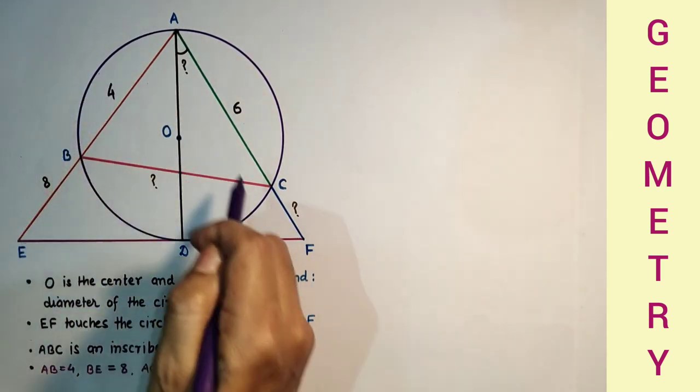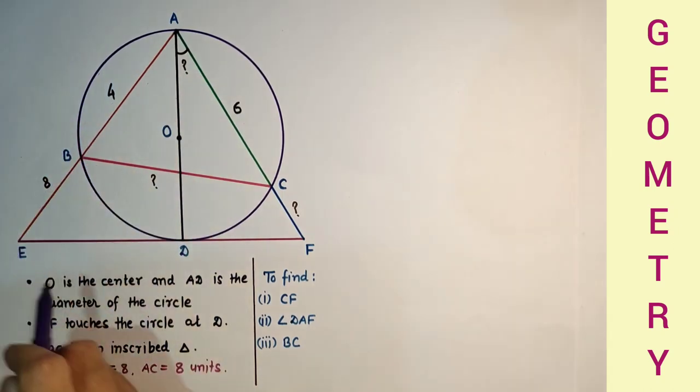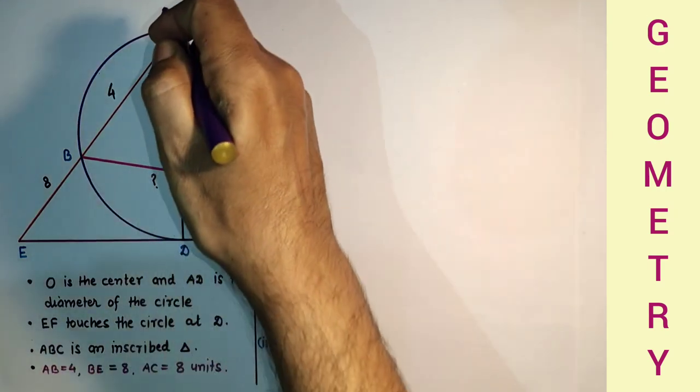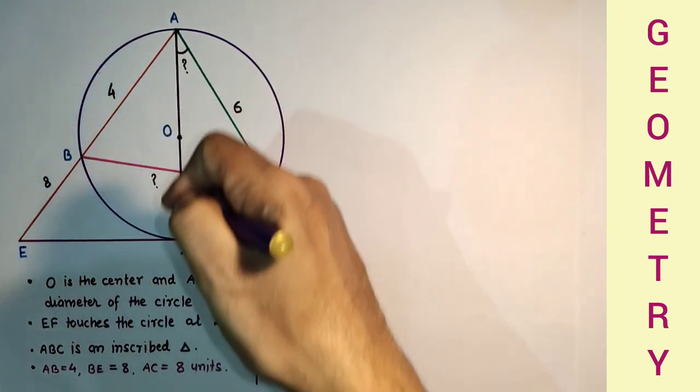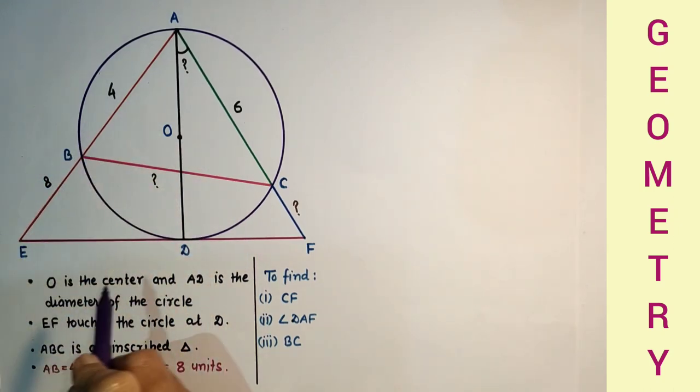A triangle ABC is inscribed in this circle. AEF is another triangle. EF touches the circle at point D. AD is diameter, the longest chord. O is the center of the circle. We are given that side AB of triangle ABC is 4 units and BE is 8 units.